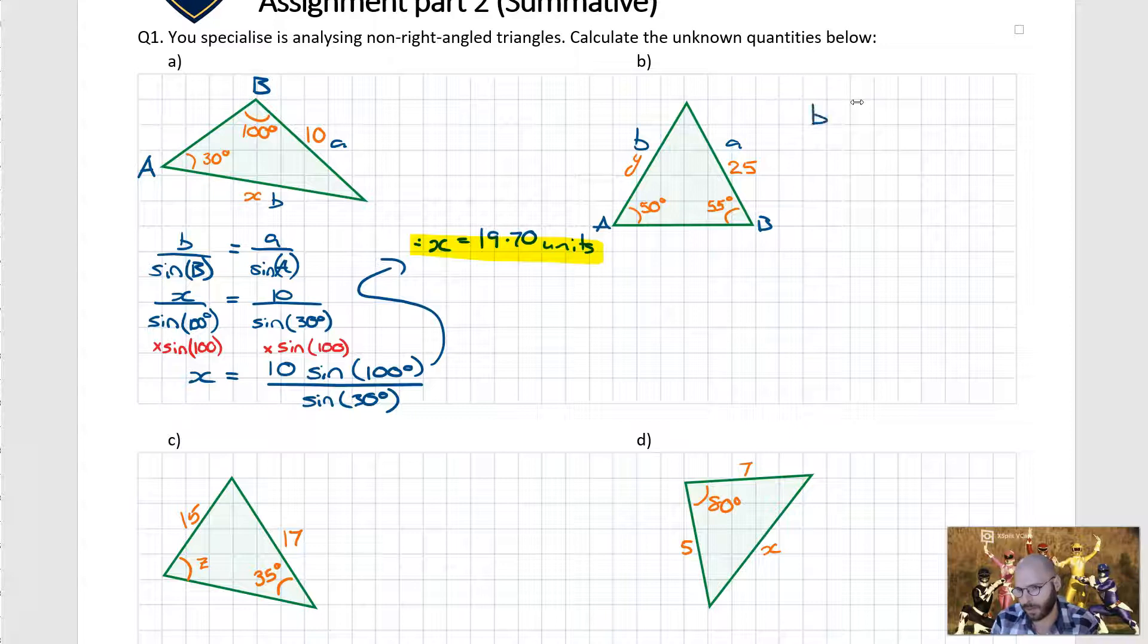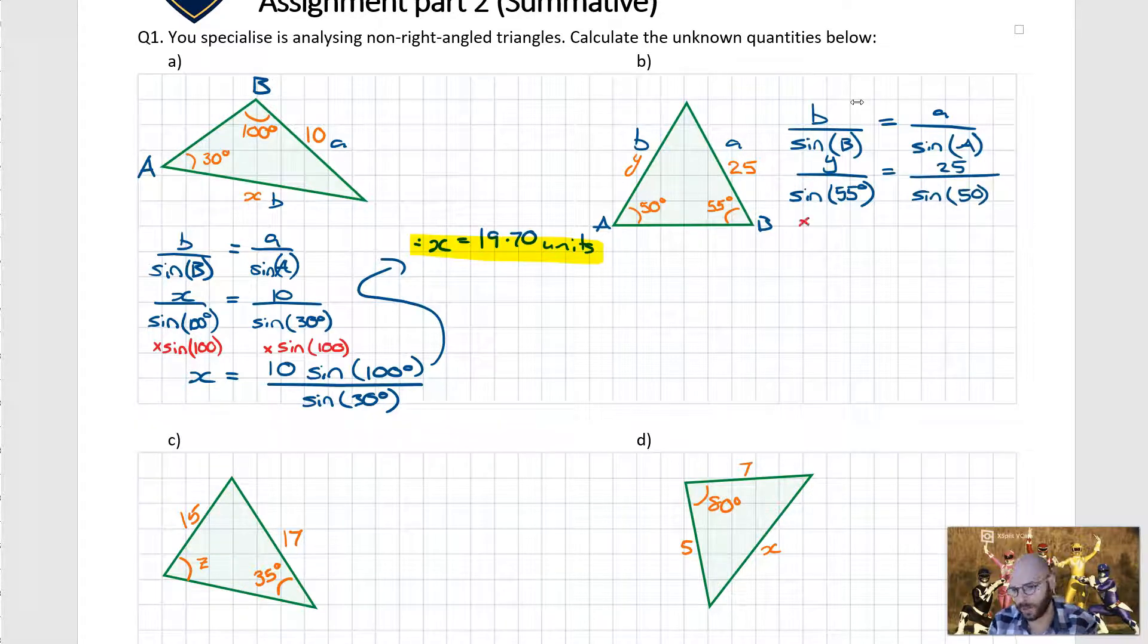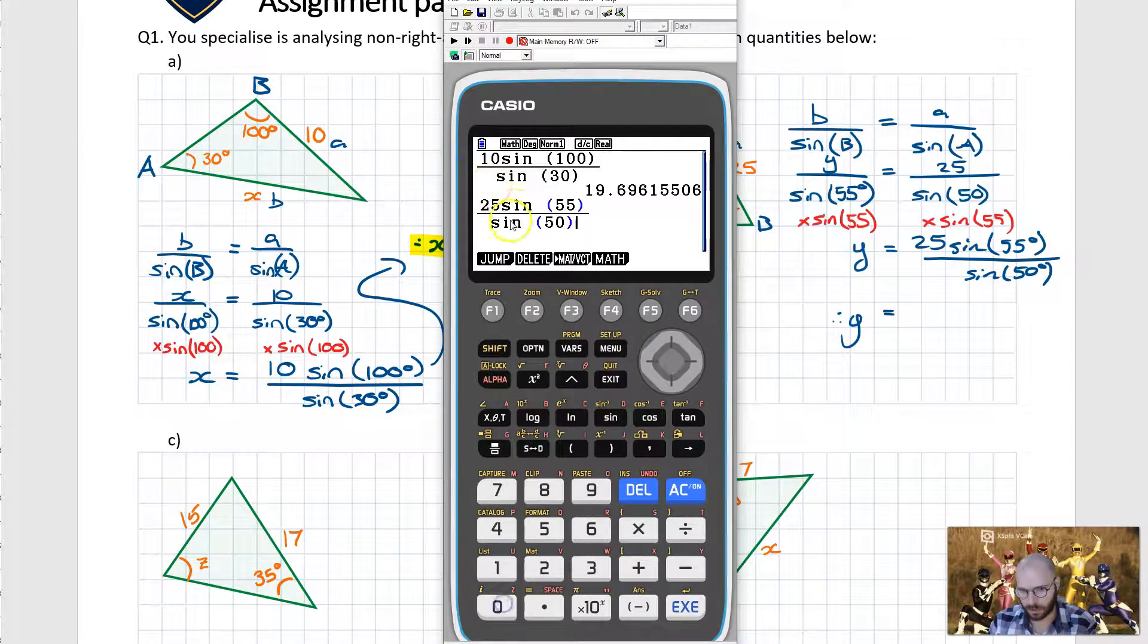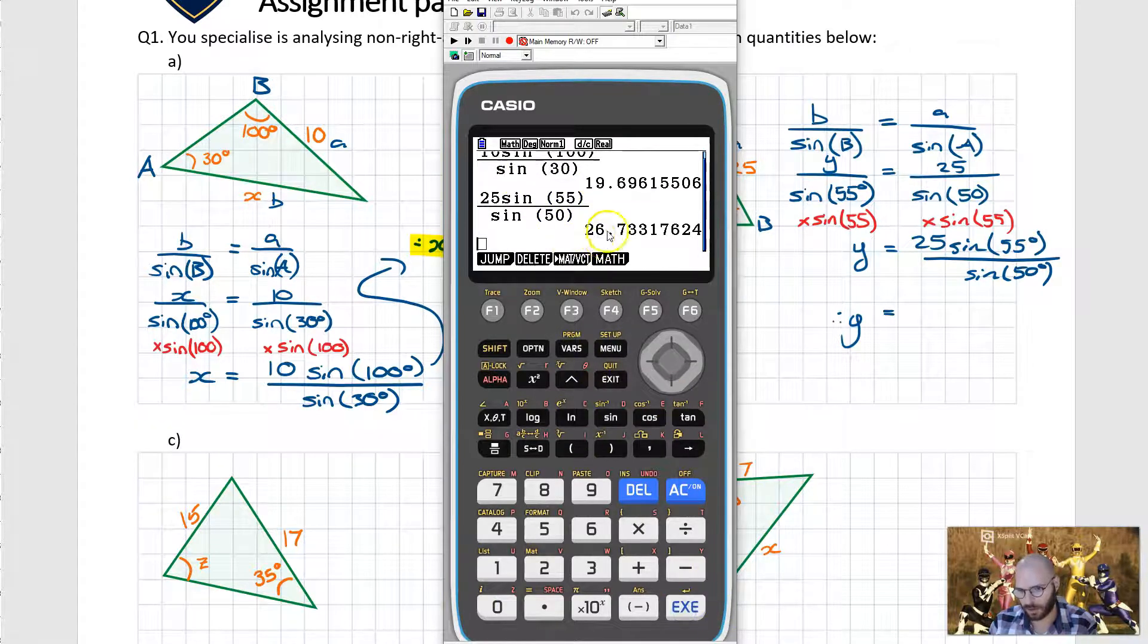So I'm going to start off by writing B over sine B is equal to A over sine A. Subbing in the values we get Y over sine of 55, then we're going to get 25 over sine of 55. Rearranging I multiply both sides by sine of 55 and this will yield 25 sine of 55 all divided by sine of 50 degrees. Next step is I bring my calculator up and we go 25 sine of 55 all divided by sine of 50 and we get roughly 26.73.